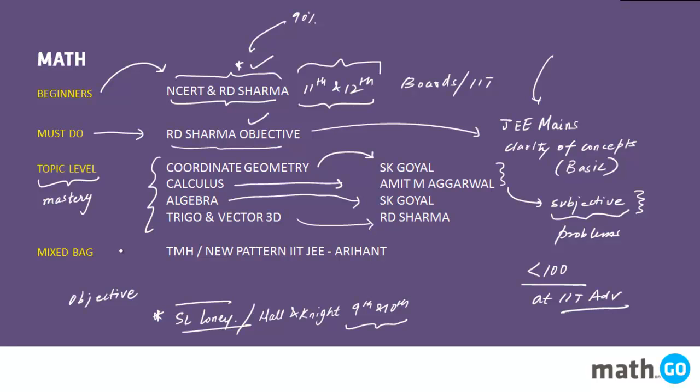For the mixed bag questions, again if you want, TMH is the mixed bag book which you can follow. Brilliant book I would say, or either New Pattern IIT JEE, again a very good book. This is more than sufficient. In fact, there is a lot of list that you have to do here. There is a lot of stuff. But again, the order remains the same. Please do not mix the order. Order is important. You have to go from here to here. You cannot directly jump to this particular category. Don't do this. Order is much more important.